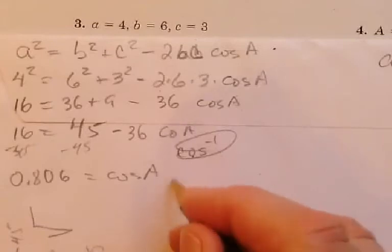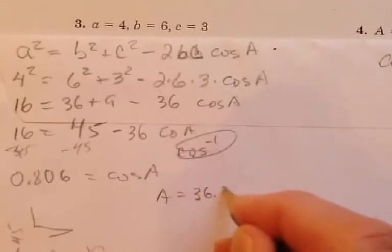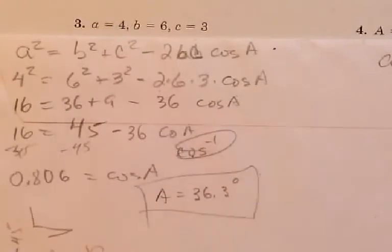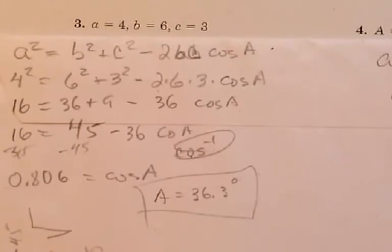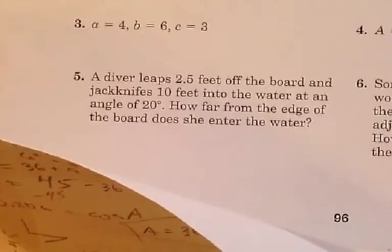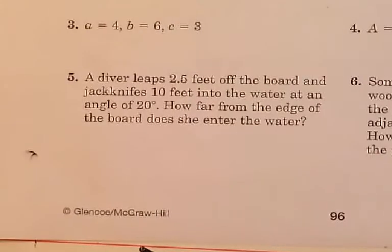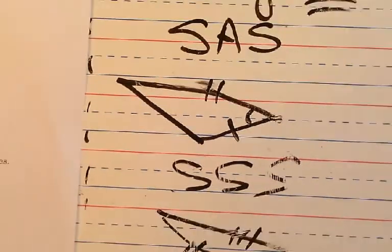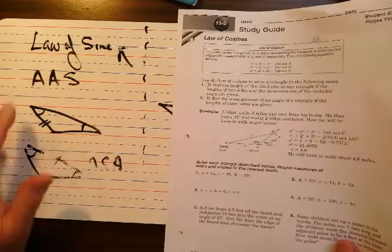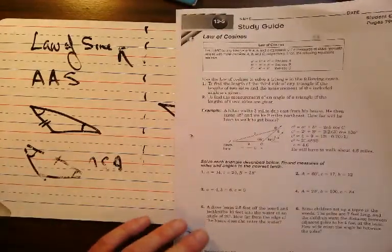Angle A is 36.3 degrees. Working with the law of cosines happens whenever you're using side-angle-side or side-side-side. And the law of sines — that's the one where you have fractions on top of each other — that happens whenever you have angle-angle-side or angle-side-angle. See ya tomorrow!